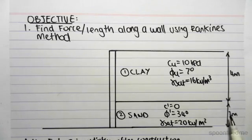We then have a 2 meter layer of sand, with C dash equals 0, Phi dash equals 34 degrees, and GammaSat equals 20 kN per meter cubed.